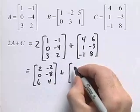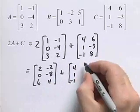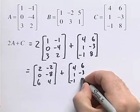And then we just rewrite matrix C: 4, 1, negative 1, 6, negative 3, 8.